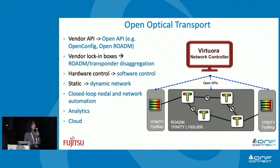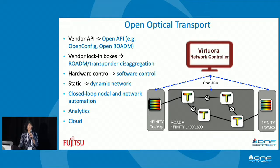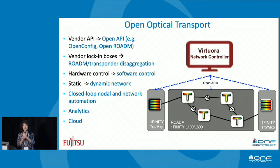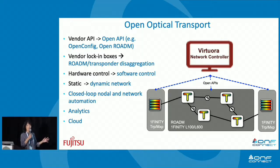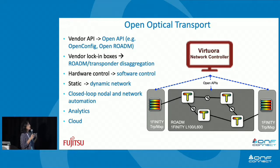So open optical transport — we are all witnessing and leading, and probably making together, this transformation from vendor-locked equipment to open, disaggregated optical networks. We at Fujitsu have a very clear understanding of the transformation in multiple areas: from vendor-locked APIs to open APIs. Our system supports OpenConfig, supports OpenROADM, and it's very easy to extend into future open data models.